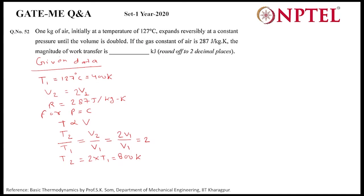So here we know the value of T2. Now we have to find the magnitude of work transfer. First we will draw the P-V diagram. Here pressure is constant, volume is V1 here and twice of V1 here, and it is the expansion process.